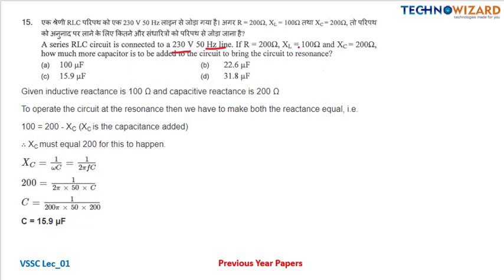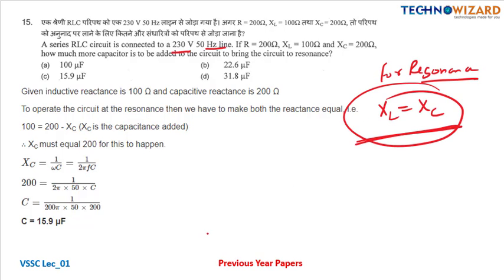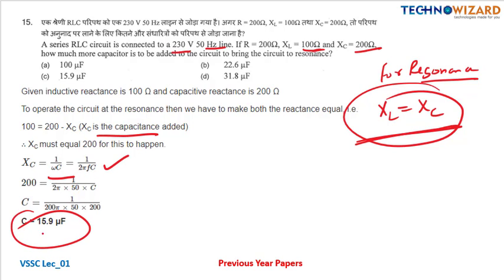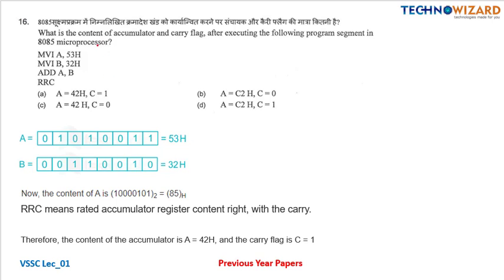Question number fifteen: an RLC circuit connected to 230 volt, 50 hertz line. R equals 200 ohm, XL equals 100 ohm, XC equals 200 ohm. For resonance, inductive reactance must equal capacitive reactance, so XL equals XC. XC to be added equals 200 minus 100 equals 100 ohm. Using XC equals 1 upon 2 pi f C, you find the extra capacitance to be added equals 15.9 microfarad, option C.